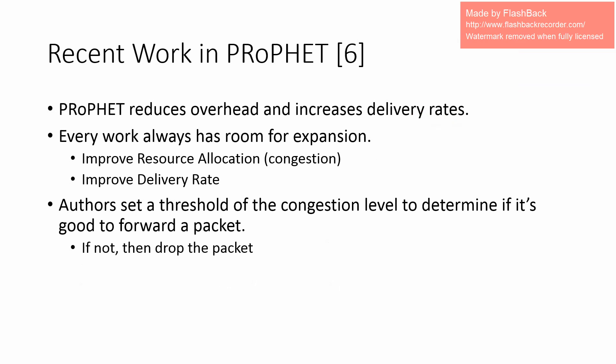PRoPHET can be evolved further by considering congestion levels in the network. In this work, the authors set a threshold to determine if a packet should be forwarded or dropped based on the congestion level. If forwarding the packet would exceed the congestion level, it would be dropped. Results show the delivery rate significantly improves and delay goes down.